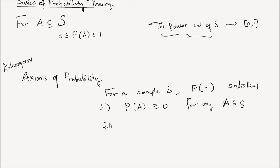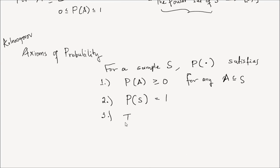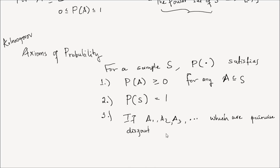The sample space must be non-empty. For a sample space S which is not empty, the set function P satisfies the following. Number one: the probability of A is greater than or equal to zero for any event A in the sample space. Number two: the probability of the sample space is equal to one — the sample space is the list of all possible outcomes of your experiment. Number three: if we have events A1, A2, A3, and so on, which are pairwise disjoint, then the probability of the union from i equals one to infinity of A_i is equal to the sum from i equals one to infinity of the probability of A_i.